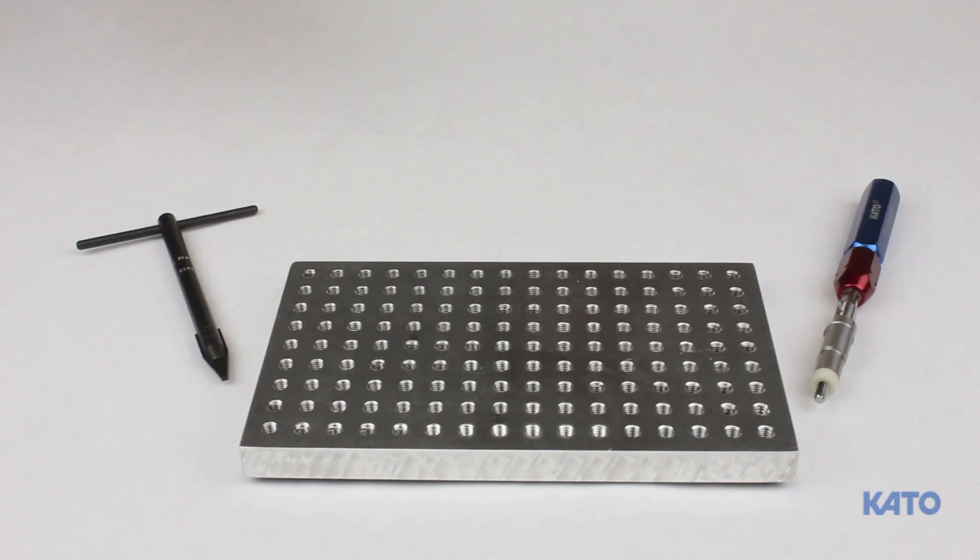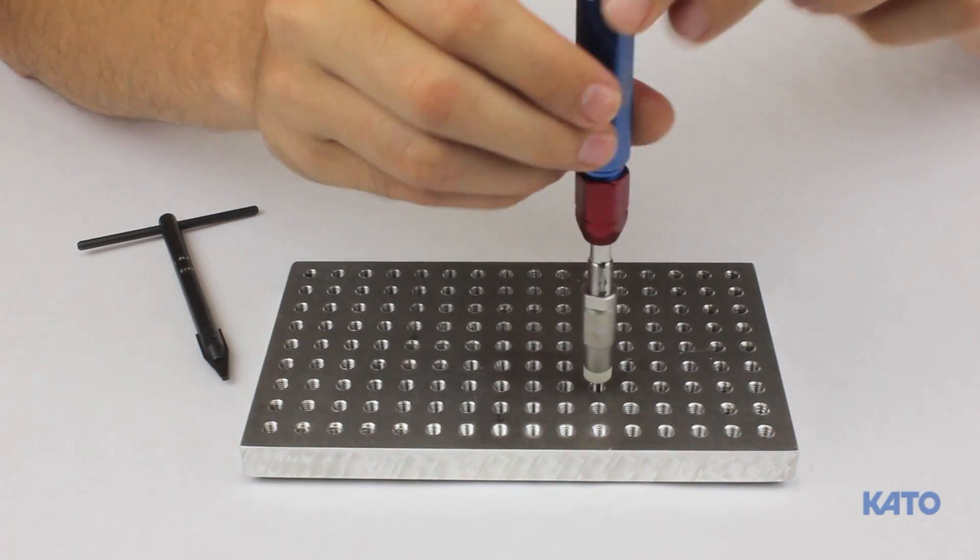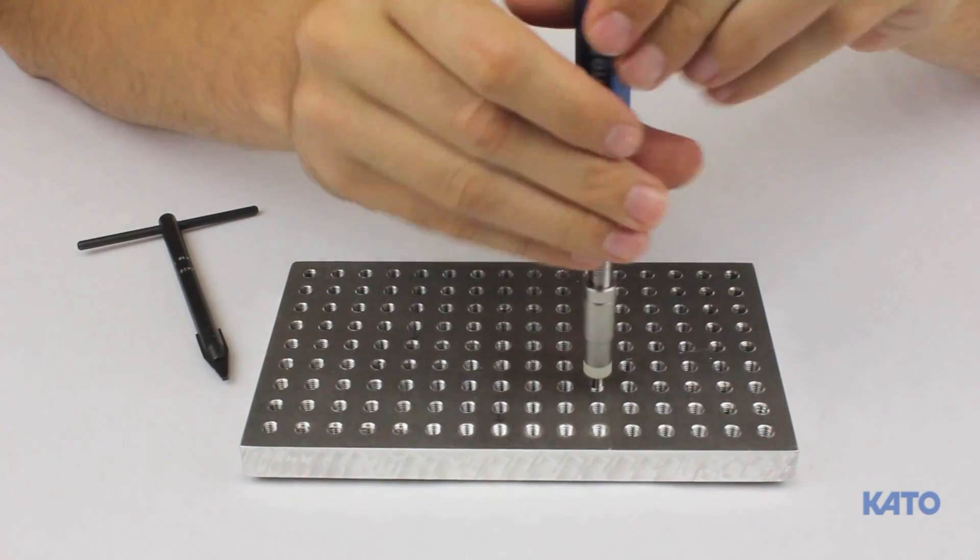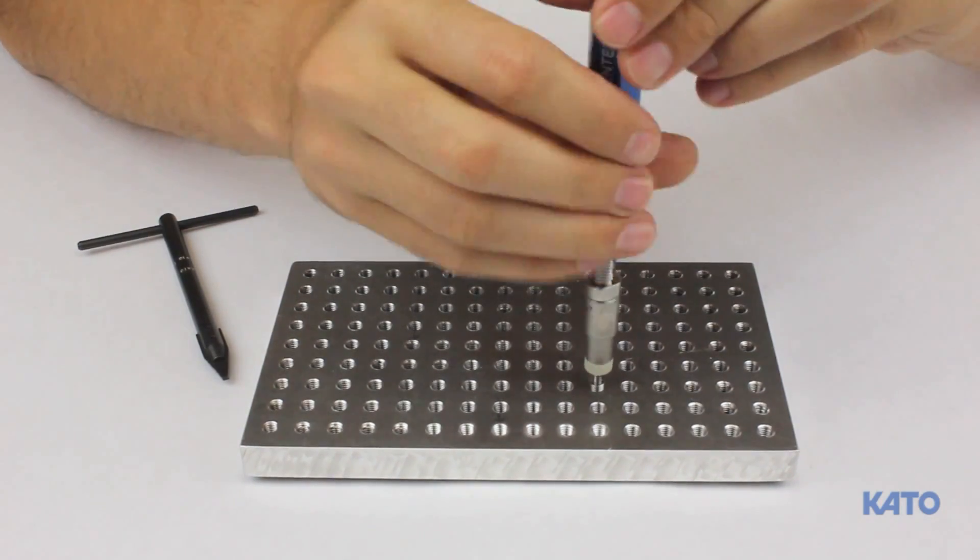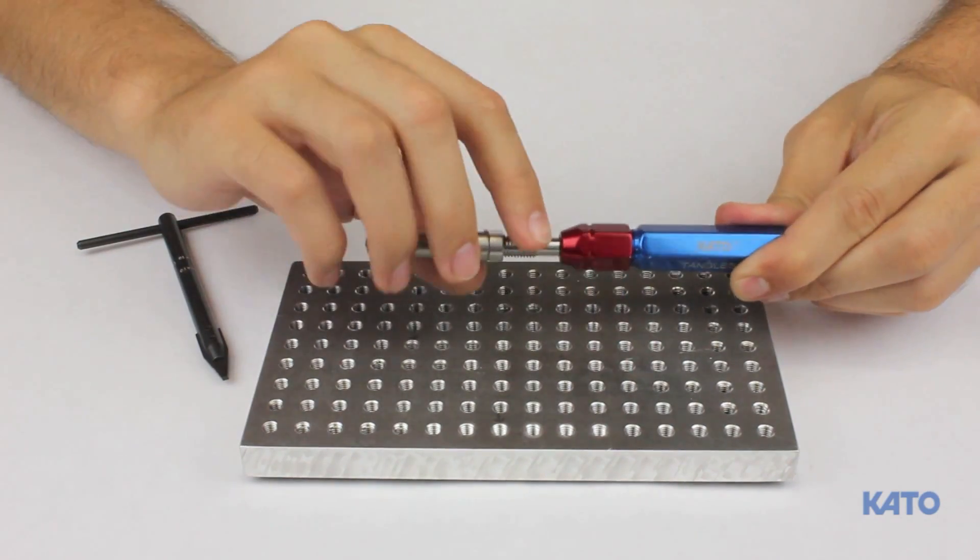Kato offers both Tangless and Tanged Removal Tools. But as you can see, removing a Tangless Coil Thread Insert is faster, easier, non-destructive, and can even be performed with the Kato Electric Driver. No other removal tool works as well or as fast as the Kato Tangless Removal Tool.